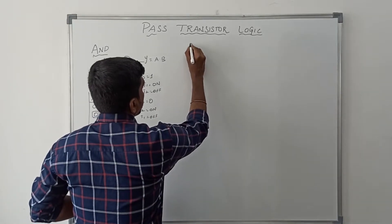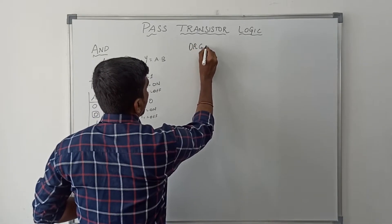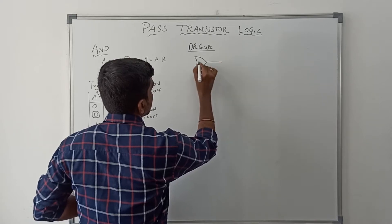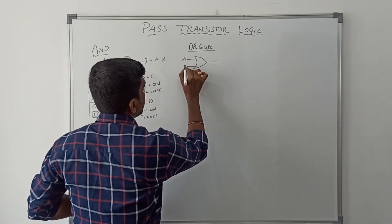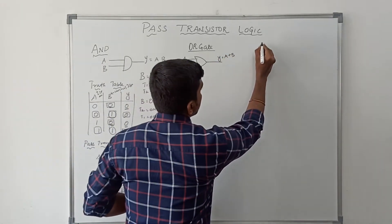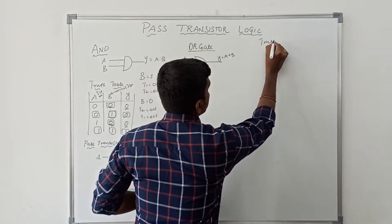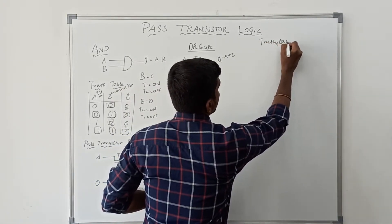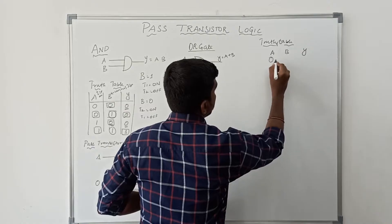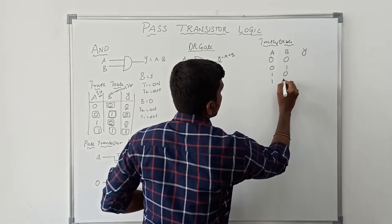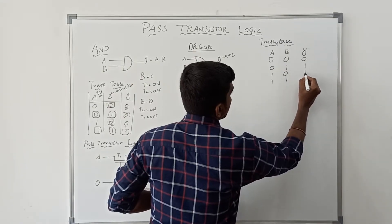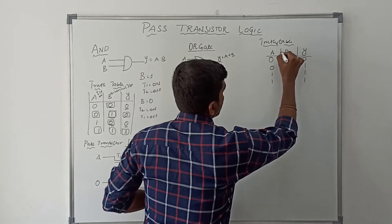Then come to the OR operation. So OR gate — this is the symbol of OR gate. A and B are the input variables, and Y is the output variable. The Boolean expression is A plus B. Truth table for OR gate: AB is the input variable and Y is the output. The combinations are 0,0 → 0; 0,1 → 1; 1,0 → 1; 1,1 → 1. So the output of the OR gate operation is 0, 1, 1, 1.